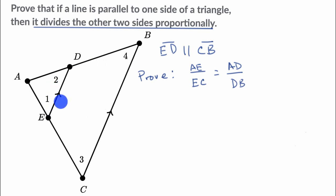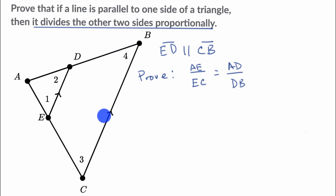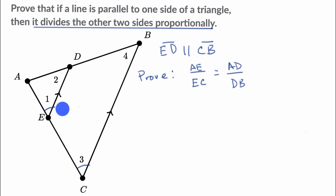The way we can try to do it is to establish similarity between triangle AED and triangle ACB. Because these two lines are parallel, we can view segment AC as a transversal intersecting two parallel lines. That tells us that these two corresponding angles are going to be congruent — so angle one is congruent to angle three.